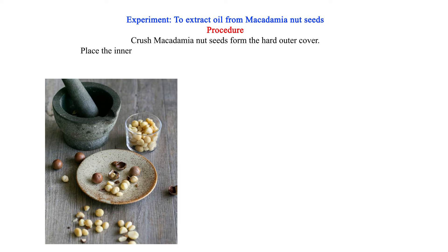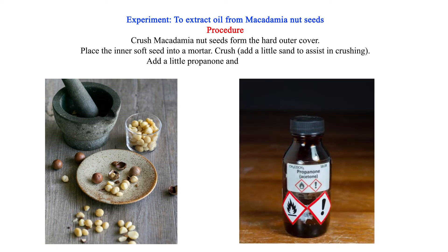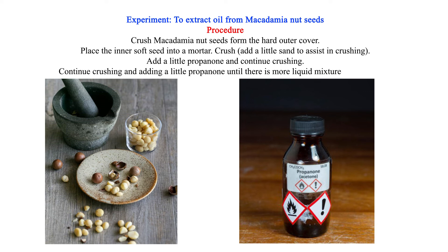Place the inner soft seed into a mortar. Crush, adding a little sand to assist in crushing. Add a little propanone and continue crushing.